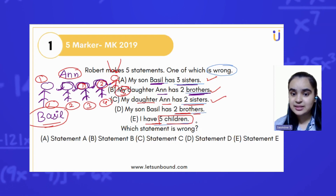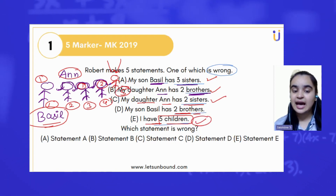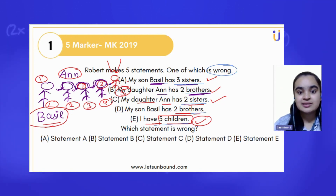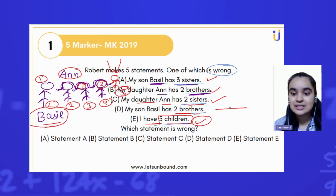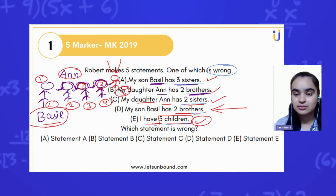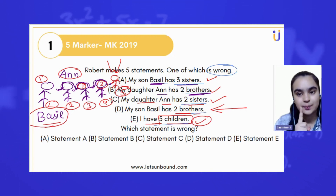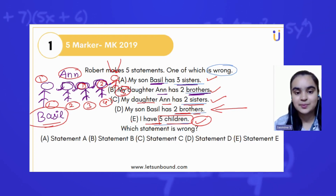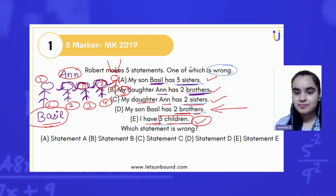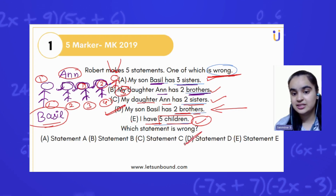So that means statements A, B, C, and D are correct — they are interrelated to each other. Whereas option number D, which says my son Basil has two brothers, that is out, because that does not make sense. Basil has only one brother; it is not possible that Basil has two brothers. Hence, we got our answer: the wrong statement is D, statement D.